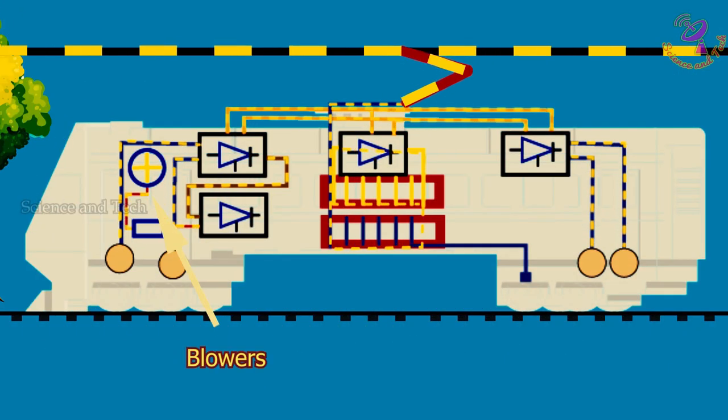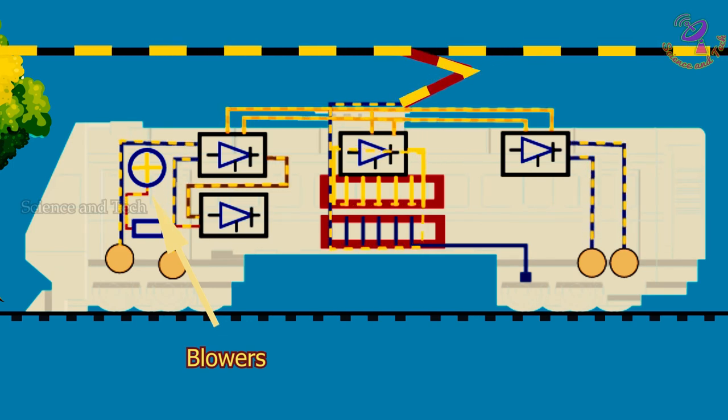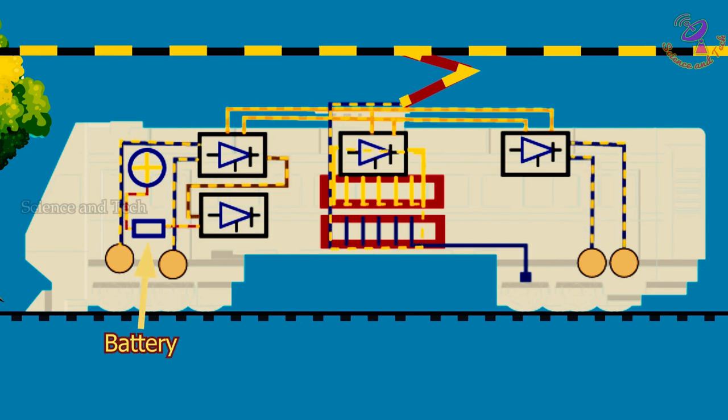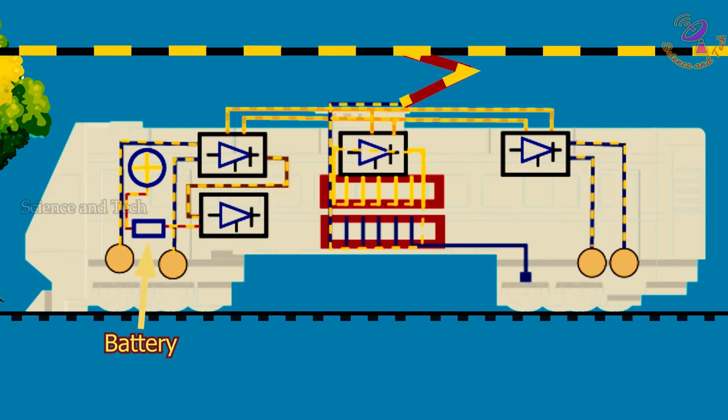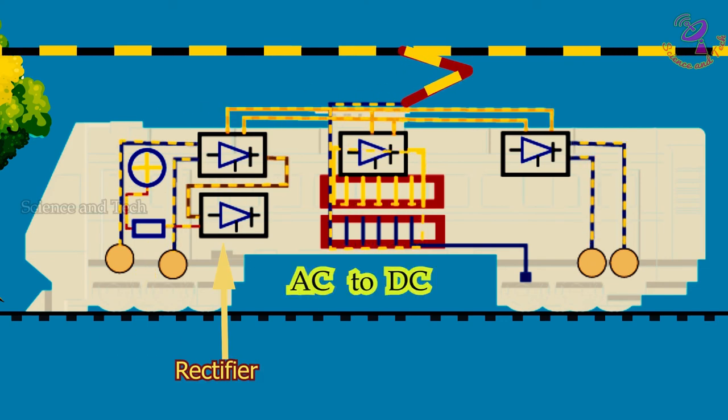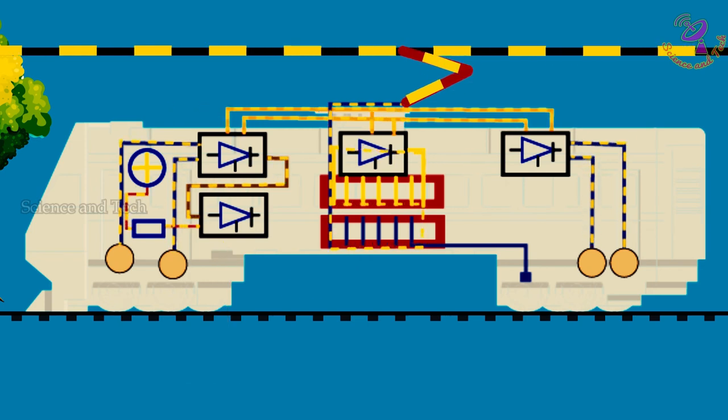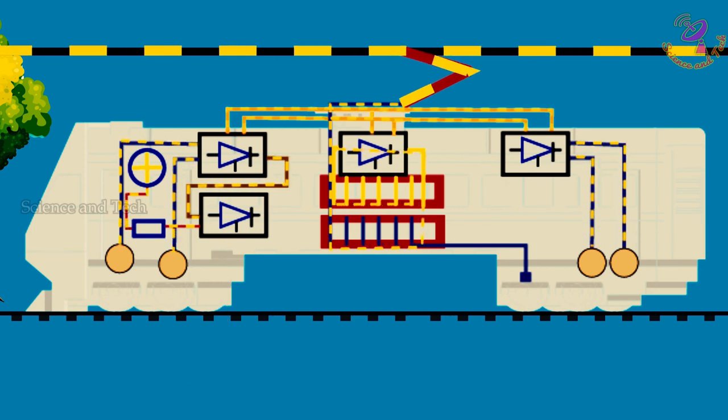There are blowers, fans, and lights on trains. To supply electricity for those devices, the battery is necessary. To charge this battery, a small rectifier is used to convert AC to DC from the inverter supplying electricity and supplying DC to the battery. The stored energy at the battery will be used to power blowers, fans, and lights.